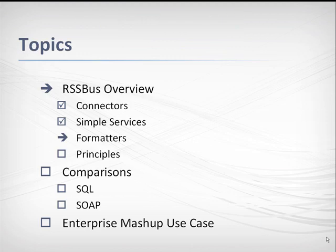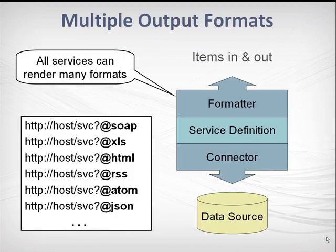Simple services have one more feature that sets them apart from most other kinds of web services. Any simple service can accept a special parameter that controls the formatting of its output. The default format is RSS, but you can also request HTML, Atom, and JavaScript output, plus SOAP messages, dynamic Excel spreadsheets, and more. You can also write template files that embed connector results inside your own custom output. These are often used to create HTML forms, wiki gadgets, or custom portlets.